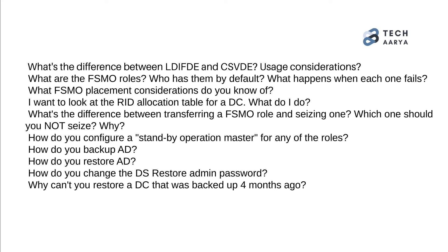103. What FSMO placement considerations do you know of? 104. I want to look at the RID allocation table for a DC — what do I do? 105. What is the difference between transferring an FSMO role and seizing one? Which one should you not seize, and why? 106. How do you configure a standby operation master for any of the roles? 107. How do you backup AD?